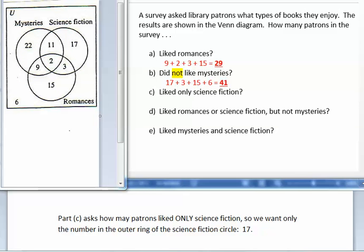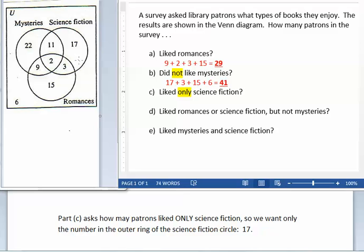Part C asks how many patrons liked only science fiction. So we want only the number in the outer ring of the science fiction circle, 17.